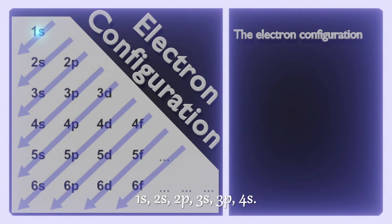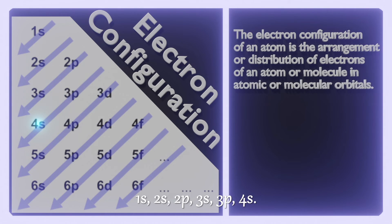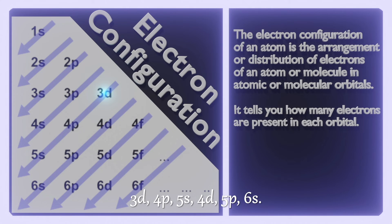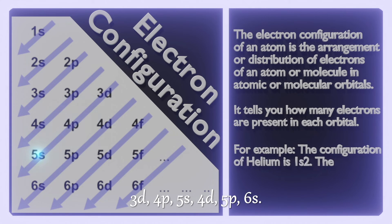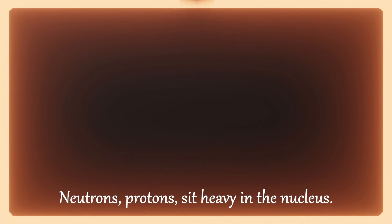1s, 2s, 2p, 3s, 3p, 4s, 3d, 4p, 5s, 4d, 5p, 6s — the electron configuration sequence following the Aufbau principle.